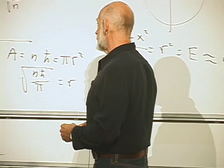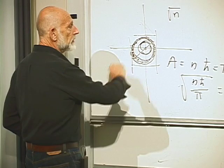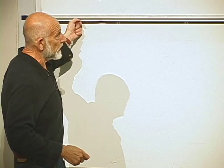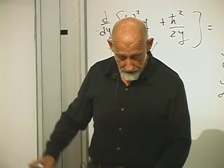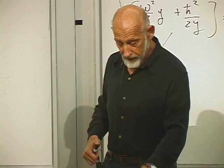In thermal equilibrium, these different rings have a probability distribution — the Boltzmann distribution — and the entropy is whatever it is. Let's go back to the classical and quantum mechanical harmonic oscillator.